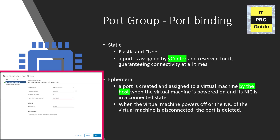Port binding is a way you configure your virtual machines and virtual network adapters — how you want to connect them to a distributed switch. There are three different types of port binding available.